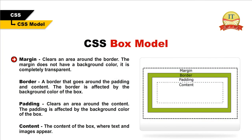Following image illustrates the box model. Margin: clears an area around the border; the margin does not have a background color — it is completely transparent. Border: goes around the padding and content; the border is affected by the background color of the box. Padding: clears an area around the content; the padding is affected by the background color of the box. Content: the content of the box where text and images appear.